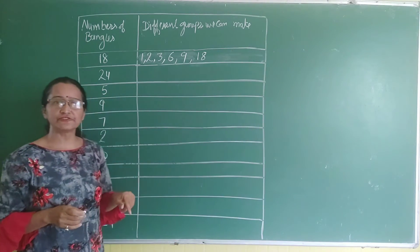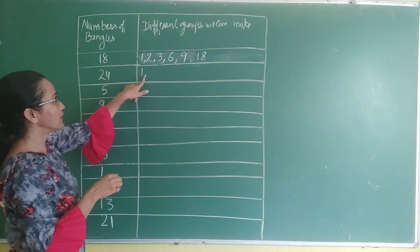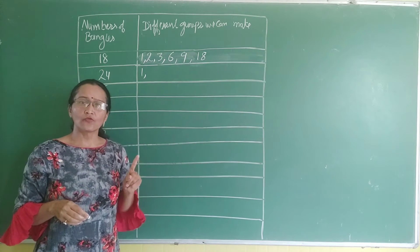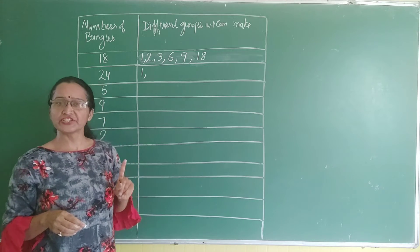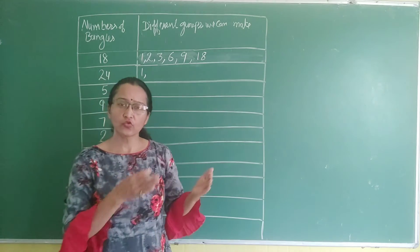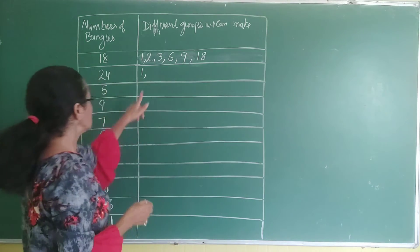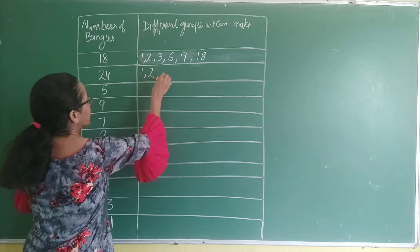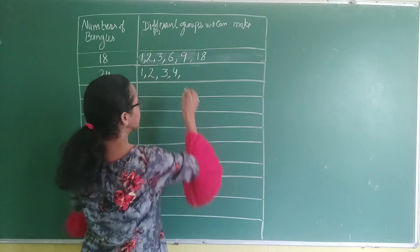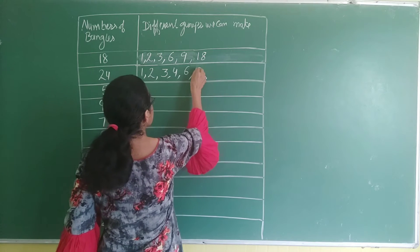Next is 24. For 24, we make a group of 1. And 1 is always a group for any number. For 24: 2 is in the table, 3 is in the table, 4 is in the table, 5 is not in the table. After 5, 6 is in the table, 7 is not, 8 is available.